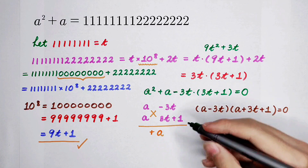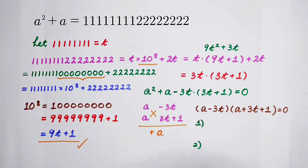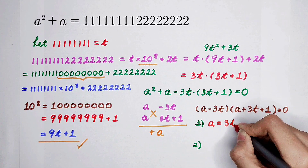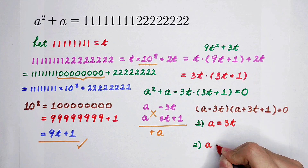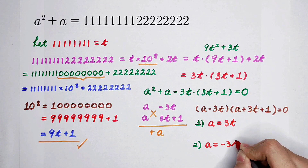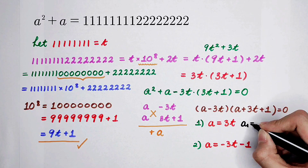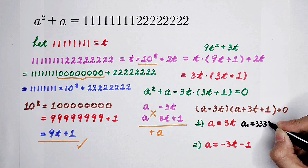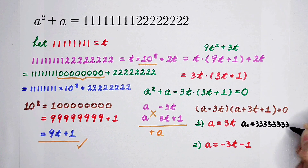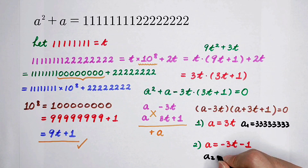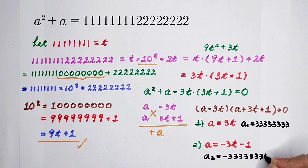Two cases. For the first case, a equals 3t, which gives a₁ equals 333333333. For the second case, a equals negative 3t minus 1, which gives a₂ equals negative 333333334.